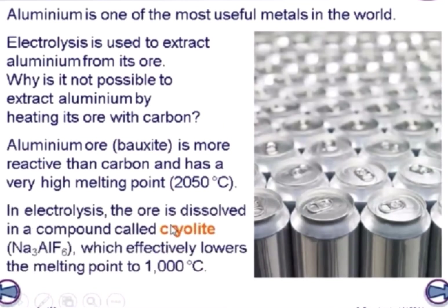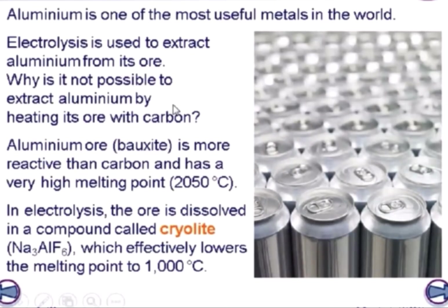In electrolysis, the ore is dissolved in a compound called cryolite, which is Na₃AlF₆. Cryolite effectively lowers the melting point of bauxite to 1000 degrees Celsius, decreasing the energy needed. This means we can use less powerful methods to break down aluminum oxide into pure aluminum through the process of electrolysis.